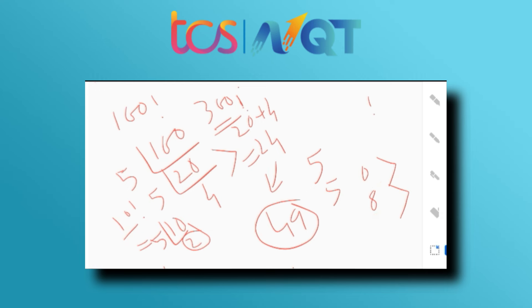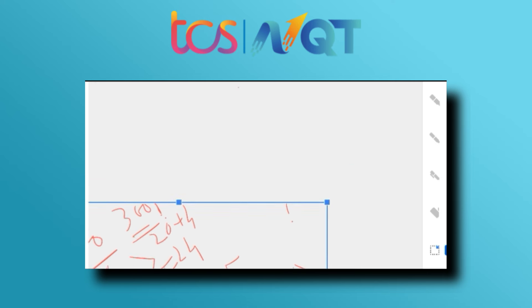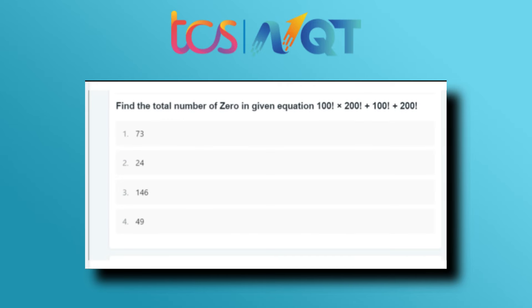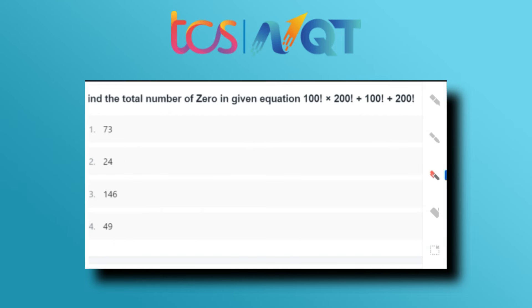In TCS NQT, you won't be asked directly to find zeros in 200! or 300!. Instead, you'll be given an equation like: 100! × 200! + 100! + 200!. What will be the count of zeros at the end of this expression? This is a very large number — so let me show you the solution. We already know 100! has 24 trailing zeros and 200! has 49 trailing zeros.